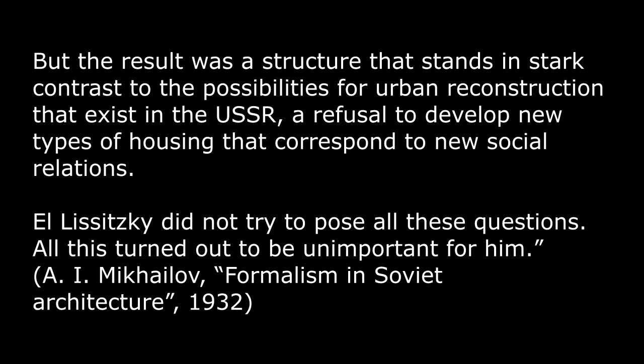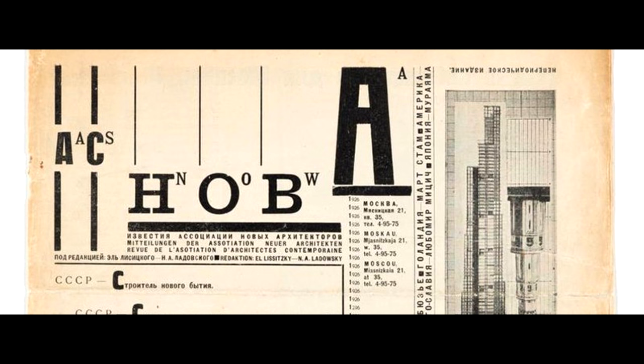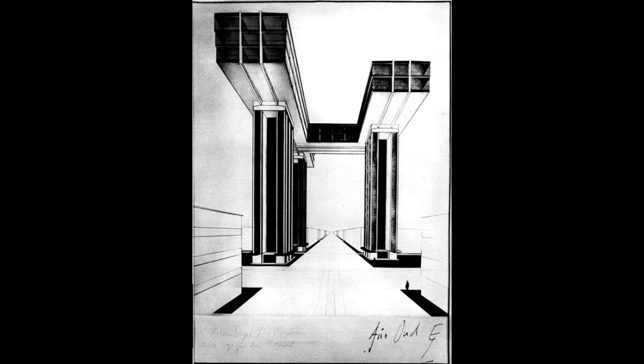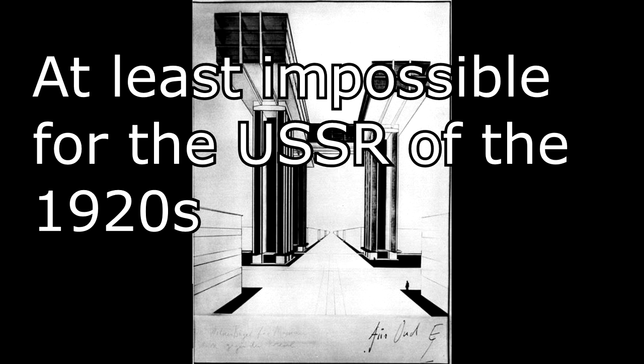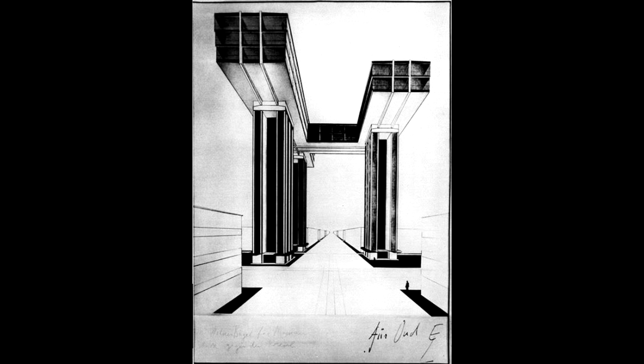The critic responds that the form was based on technology for orientation and human movement in space, and on the formal aesthetic task of achieving a contrast of horizontal and vertical tensions — corresponding to the fetishism of abstract form. But the result was a structure in stark contrast to the possibilities for urban reconstruction in the USSR — a refusal to develop new types of housing corresponding to new social relations. Elisitsky's horizontal skyscraper is a perfect example of purely paper architecture.